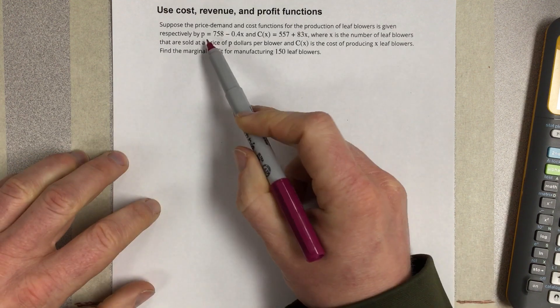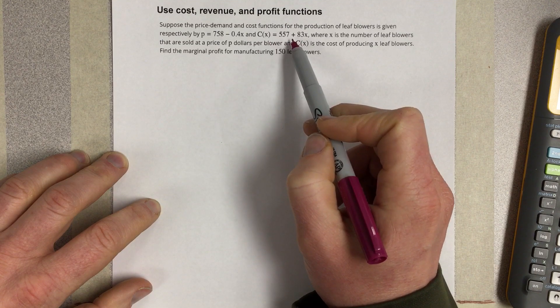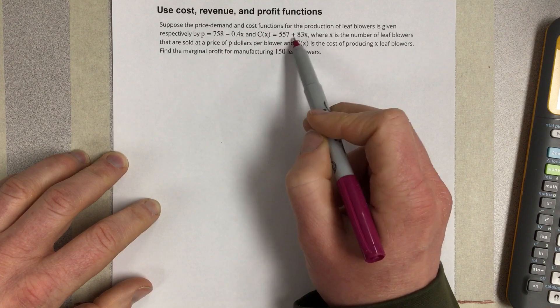So we have P, which is our profit equation, and we have C, which is our cost equation. Sorry, that's not a profit. That's our price equation, and C is our cost equation.